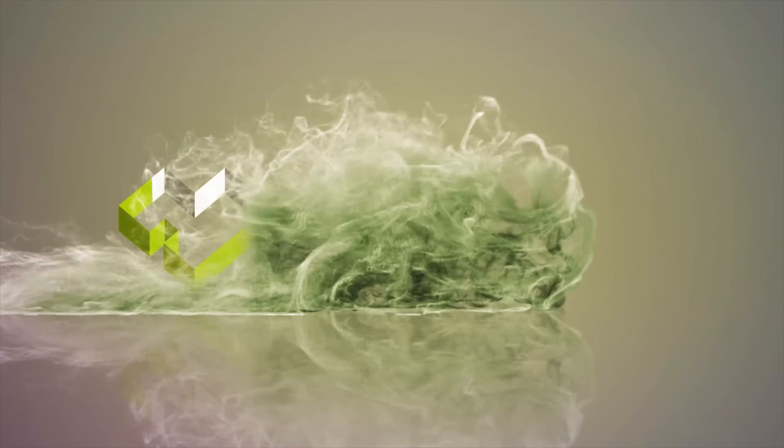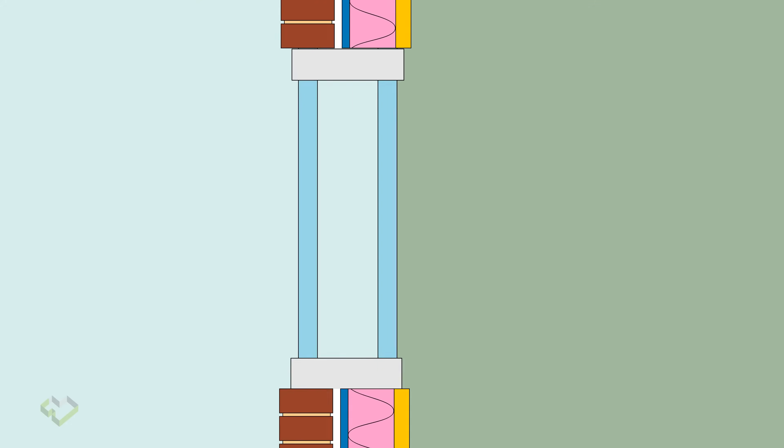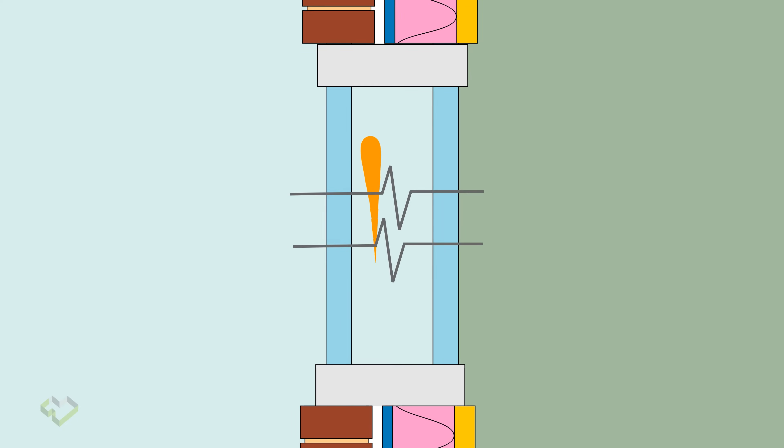Today we're going to talk about windows and why not all double-glazed windows are high performing. Windows and glass doors are key components in any house because they keep you connected with nature, allowing natural light to come in, but at the same time they allow solar heat to enter. Unfortunately, almost all doors and windows are weaker compared to your walls and roof because they have much less insulation.